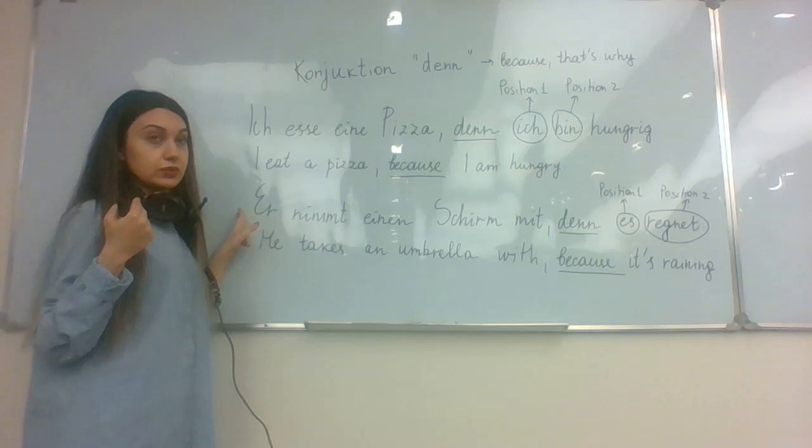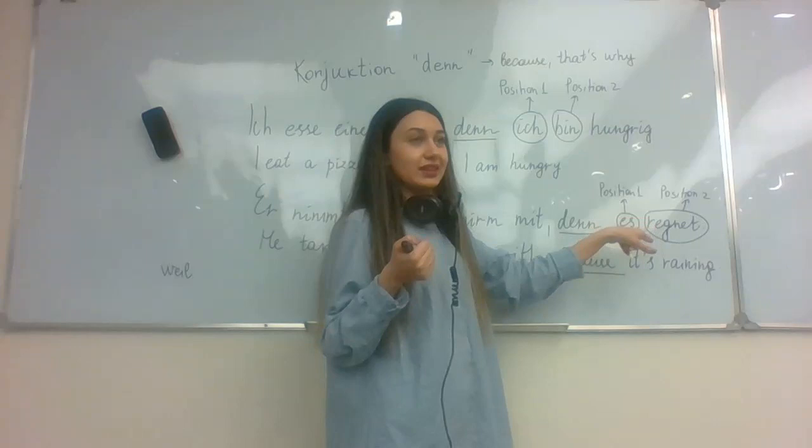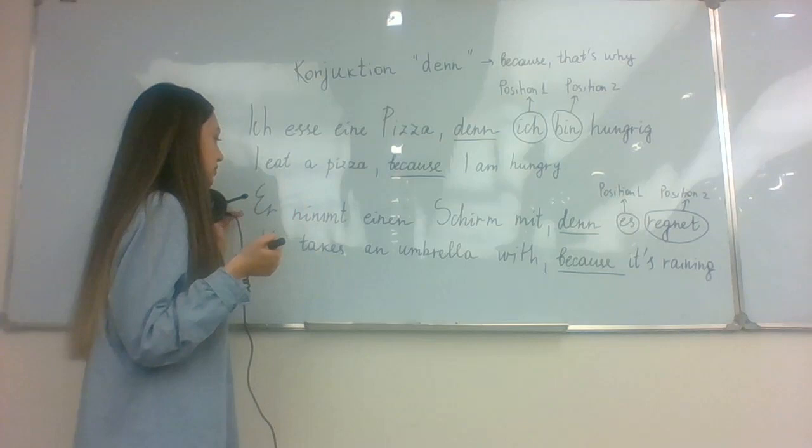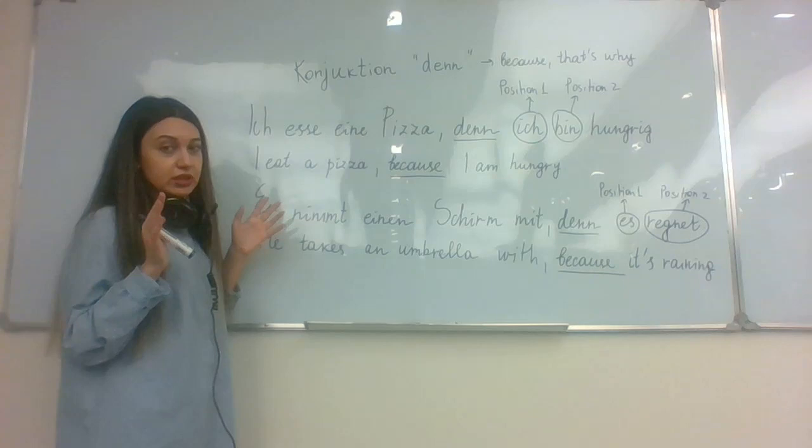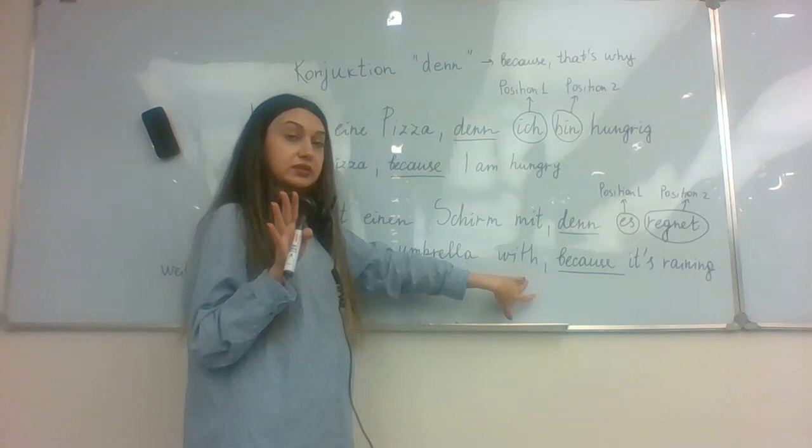I want to hear the second sentence, like example. Er nimmt einen Schirm mit, comma, denn es regnet. What it means? He takes an umbrella with, with him, because it's raining. So here, again, we have the first sentence, normal sentence, which gives us information. Er nimmt einen Schirm mit. He takes an umbrella with him. Normal sentence.